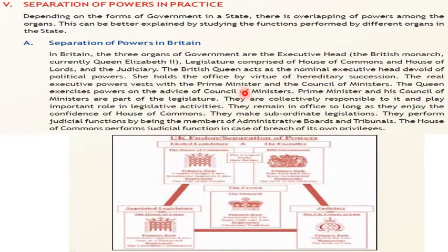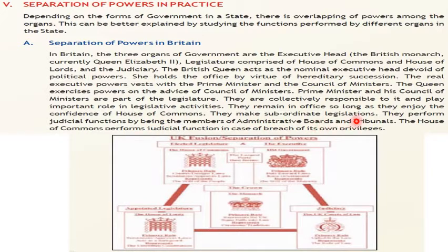The Queen exercises powers on the advice of the Council of Ministers. The Prime Minister and his Council of Ministers are part of the legislature. They are collectively responsible to it and play an important role in the legislative activities. They remain in office so long as they enjoy the confidence of the House of Commons. They make subordinate legislations and perform judicial functions by being the members of administrative boards and tribunals.